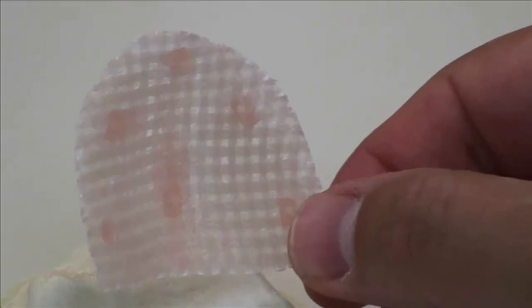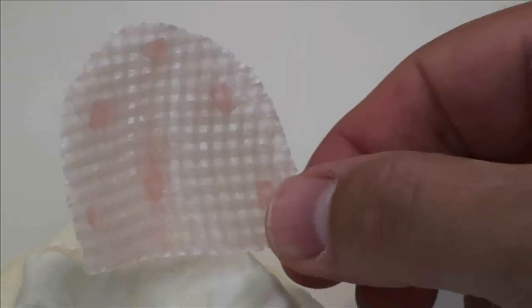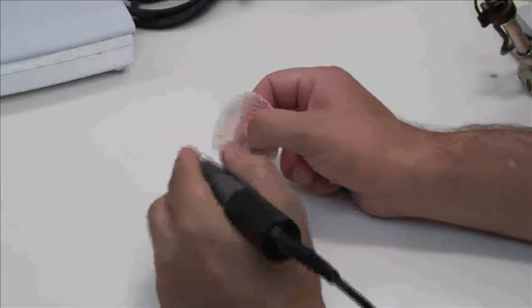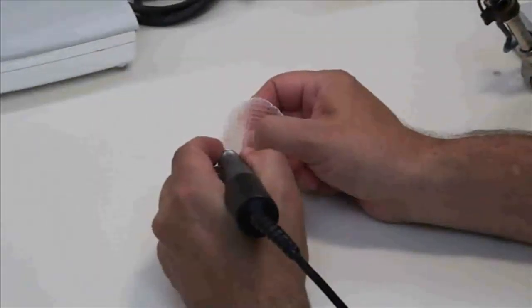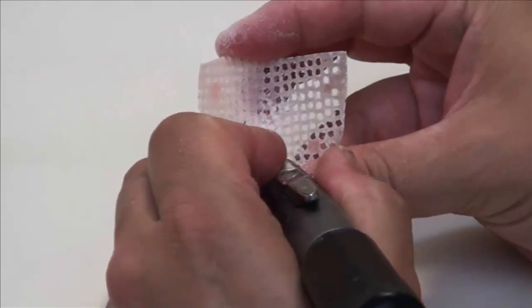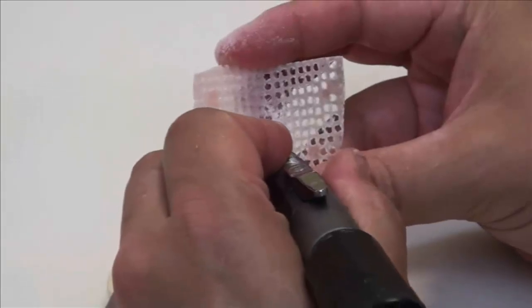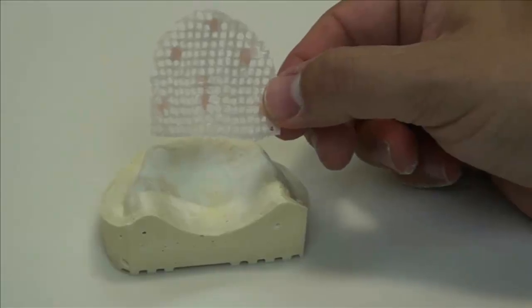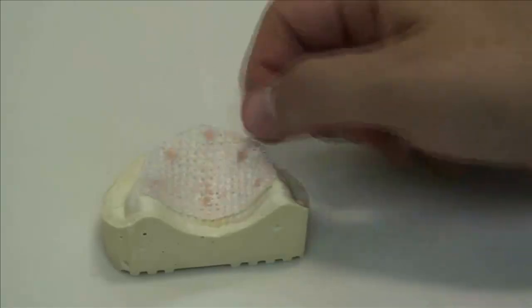The final step in the process is unblocking the thin resin flash that fills the spaces in between the fibers. This will allow the acrylic to flow through the framework when the denture is processed. Be sure to avoid damaging the fibers when opening the spaces. The framework is now ready to be processed into the denture using your usual technique.